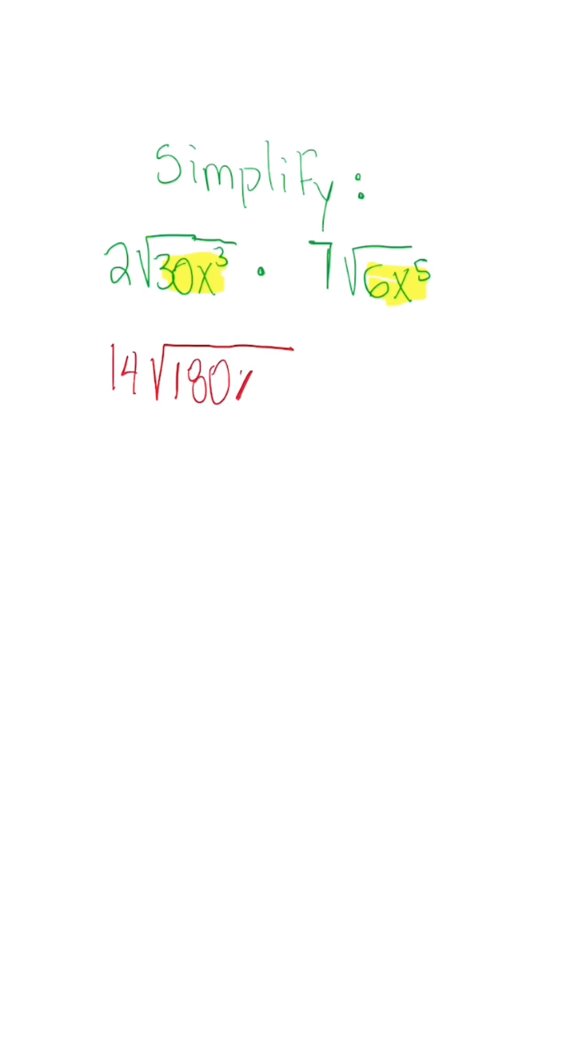Now once we break this down we're going to have 36 times 5 times x to the eighth. Now we should know that we could pull out the square root of 36 and the square root of x to the eighth.